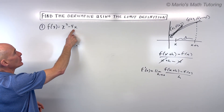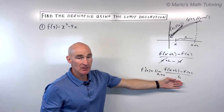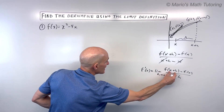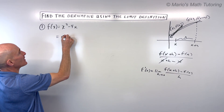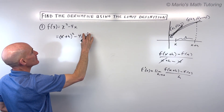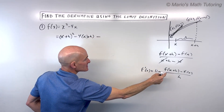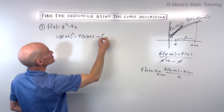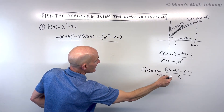So in this first example, f of x equals x squared minus 4x. We're going to use the limit definition for the derivative. We say let's take x plus h and put it in for x, wherever you see x on the right. So this is going to be x plus h, squared, minus 4 times x plus h, minus f of x — which is this original equation — all divided by h.